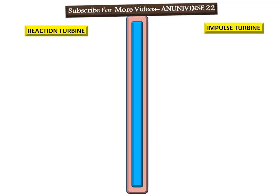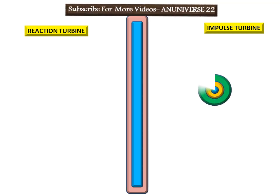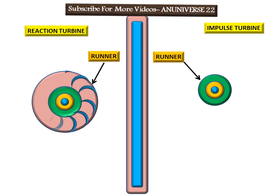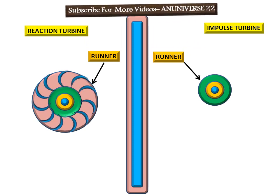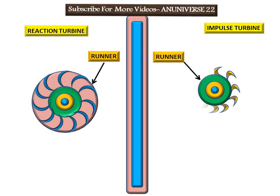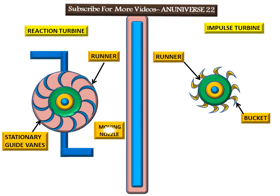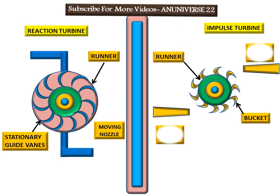First, let's look at the main components of these turbines. Both turbines use a runner. In the reaction turbine, stationary guide vanes are mounted on the runner, while in the impulse turbine, buckets are mounted on the surface of the runner. The reaction turbine has a moving nozzle, whereas the impulse turbine has a fixed nozzle.